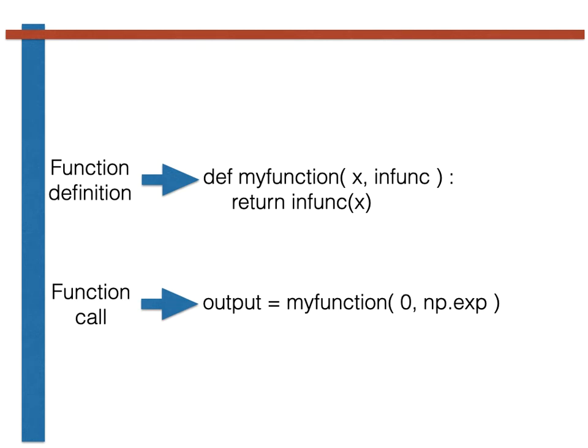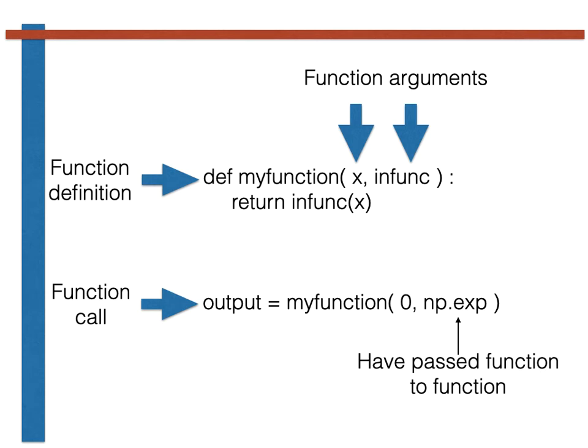Furthermore, when the function is called, arguments are passed from the calling code to the function. Notice however that the second of these arguments is a function, np.exp. When the instructions that are evaluated within the function are performed, this passed input function is evaluated so the value of the function at x is returned. In this case output is thus set equal to 1 as the exponential of 0 is 1.